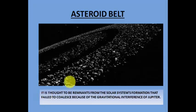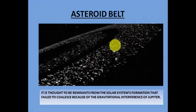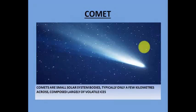The main asteroid belt contains some asteroids within the belt and others freely moving through the solar system. It contains tens of thousands — possibly millions — of objects over one kilometer in diameter.